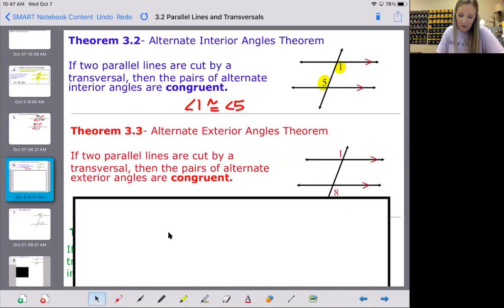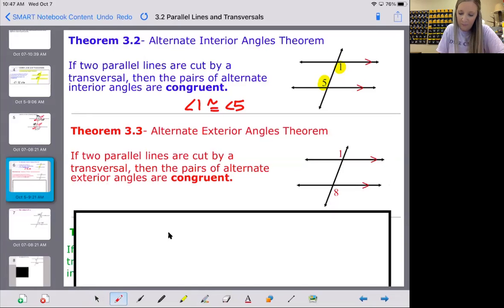Next one is alternate exterior. It essentially says the exact same thing. It says that if they are alternate exterior and it has parallel lines, then they are congruent. So angle one is congruent to angle eight.